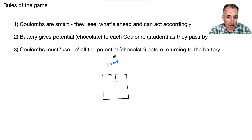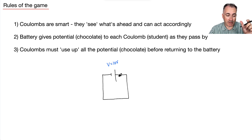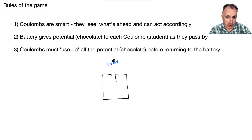So if this voltmeter — the person with really long arms — is measuring the voltage right across the battery, what will they measure? If you gained 10 pieces of chocolate — 10 volts — at one end, and by the time you get to the other end you have zero left, then the difference in potential is 10. It goes from zero to 10, which is why we call it a potential difference. In this analogy, we're measuring a difference in chocolate — either you've eaten it or gained it — and if there's a difference, you measure something.